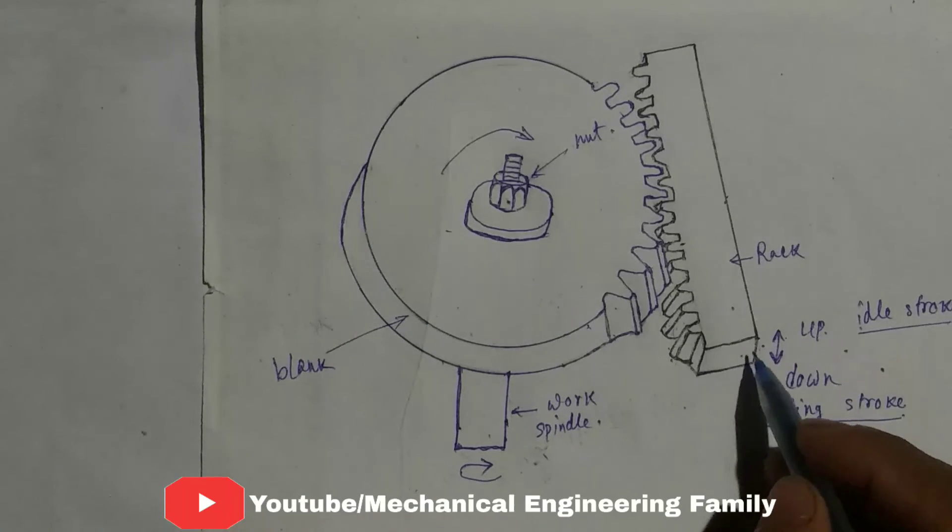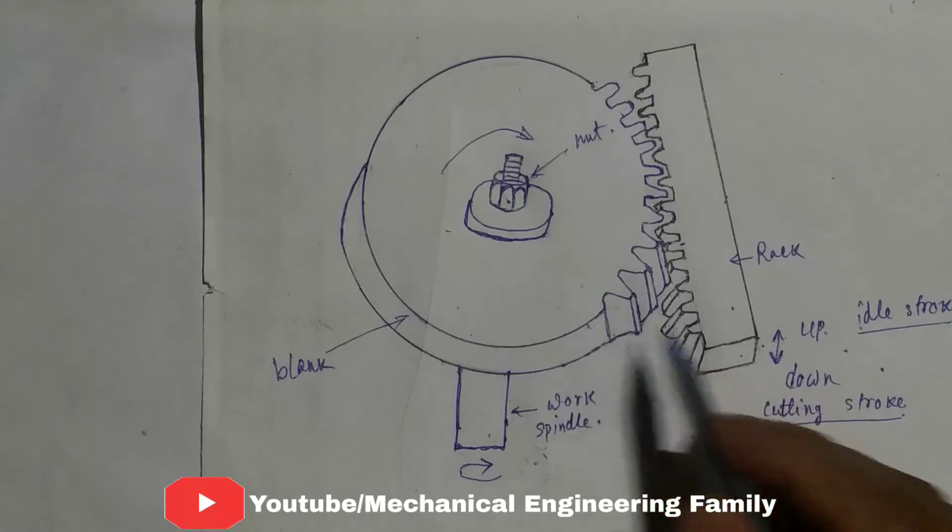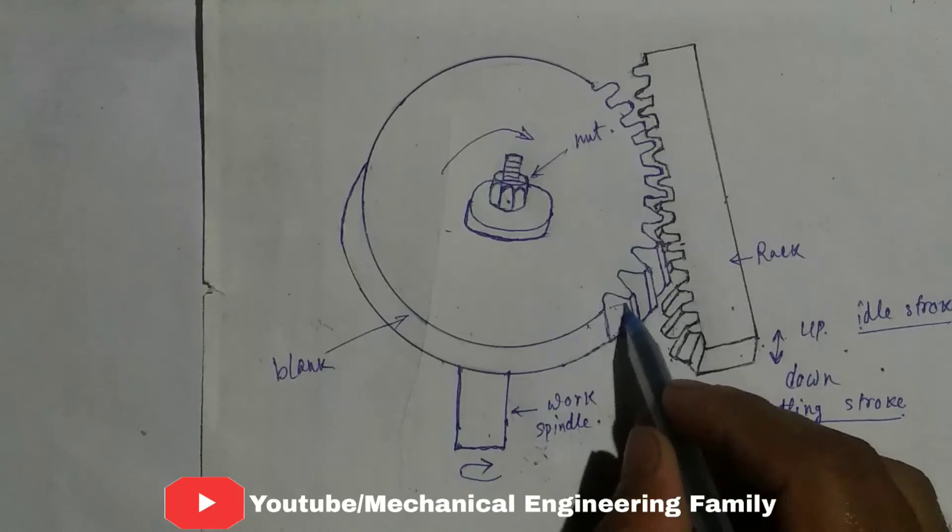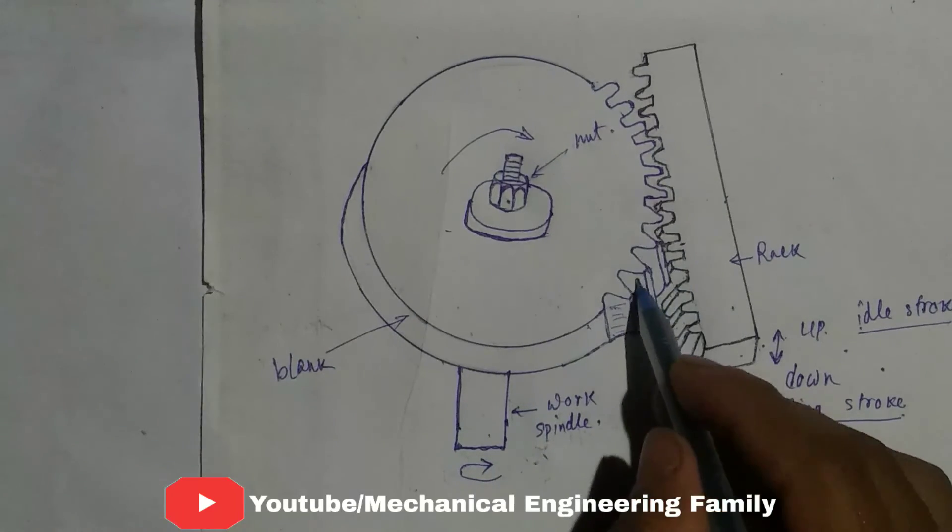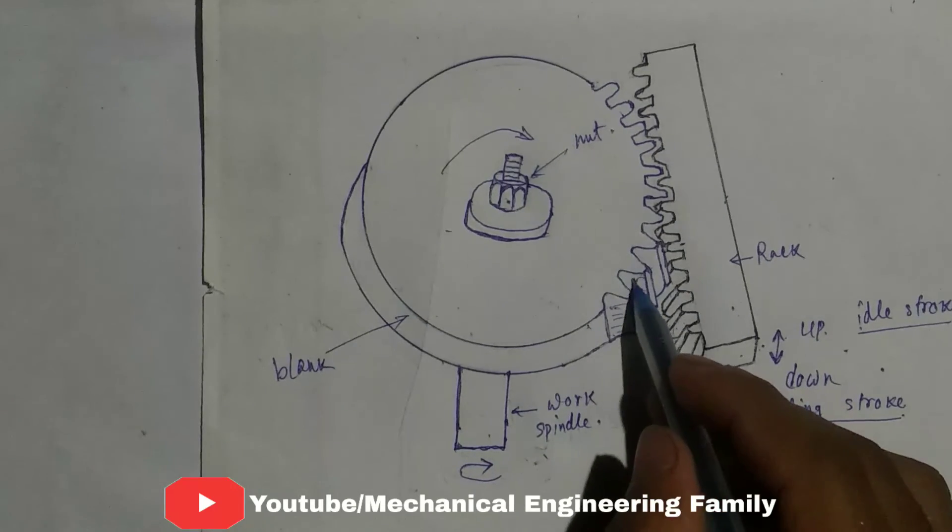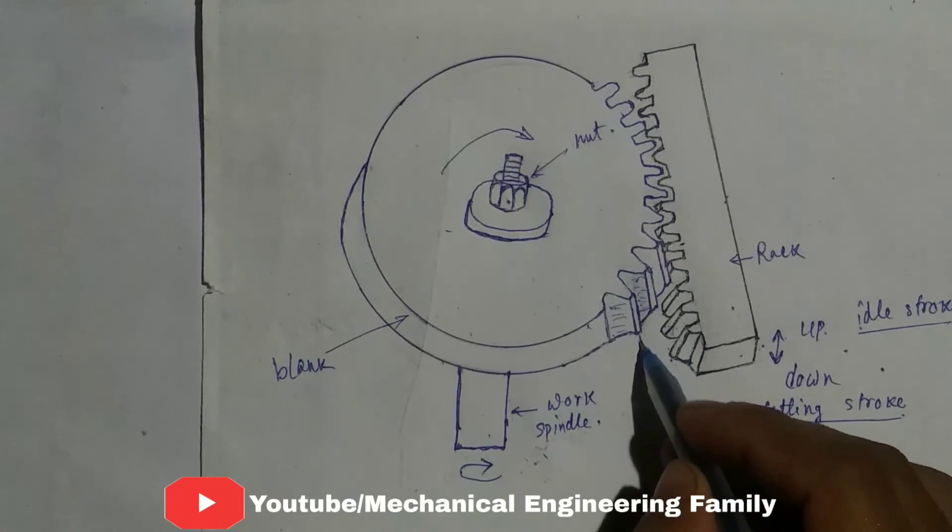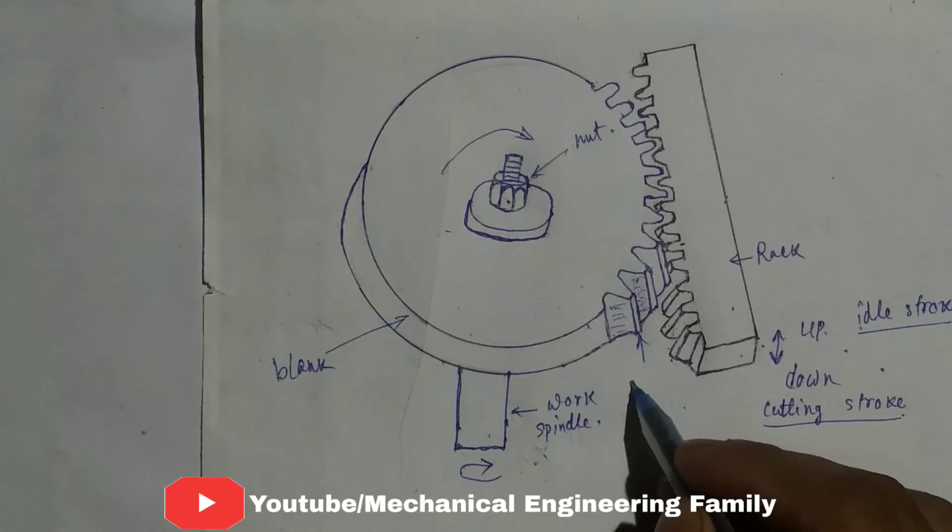As the rack moves up and down and the blank rotates, the material from this area will be removed and the gear teeth are formed.